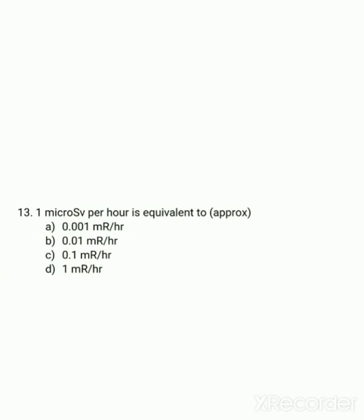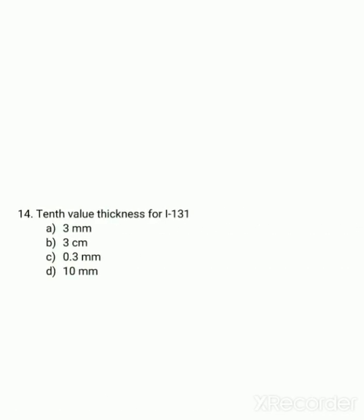One microsievert per hour can be converted using the formula: one sievert is equal to 100 roentgen. Using this formula, the exact answer is 0.1 milliroentgen per hour.